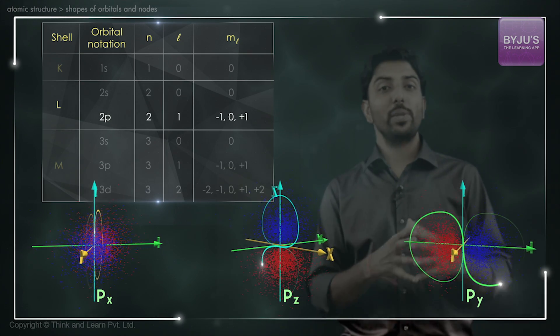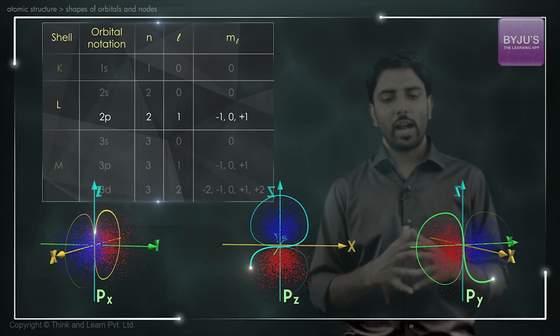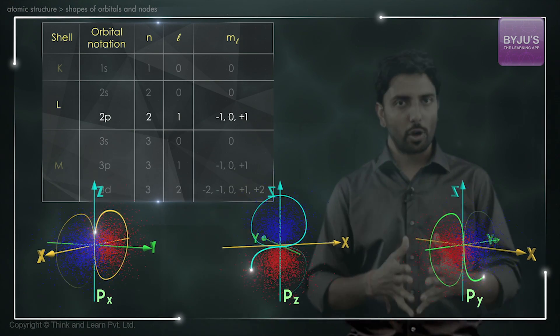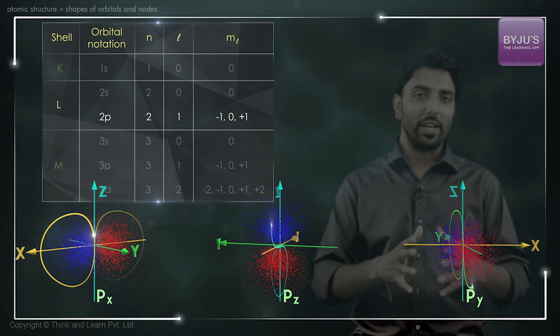S orbitals are spherically symmetric, whereas p orbitals and d orbitals, which we will explore shortly, are not spherically symmetric.